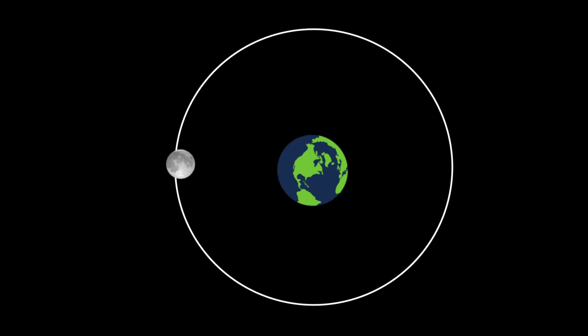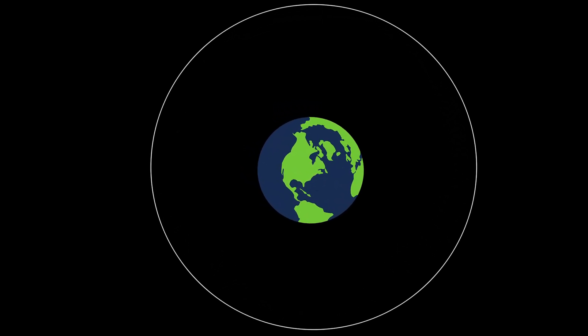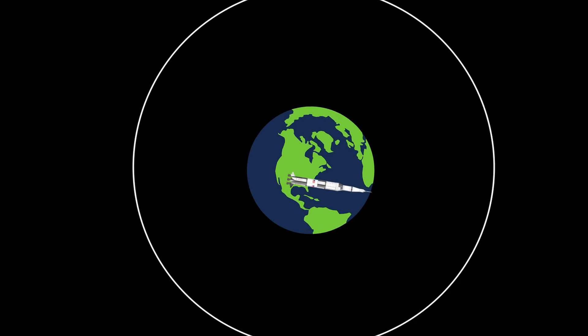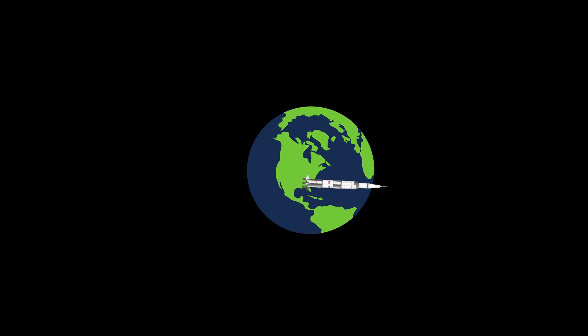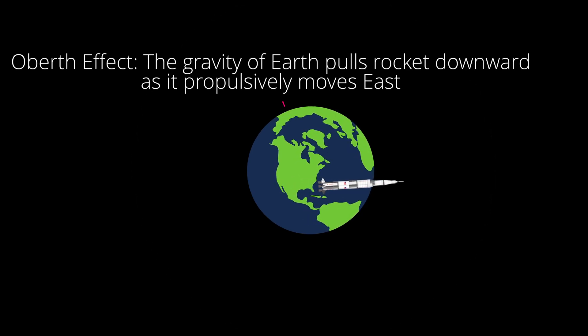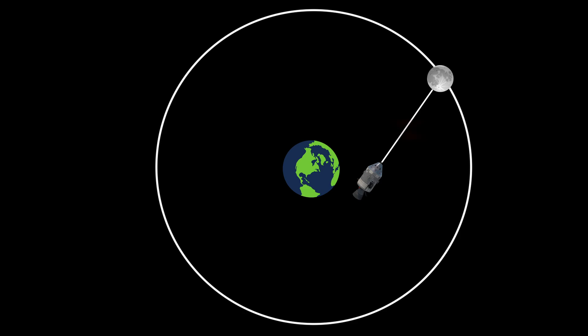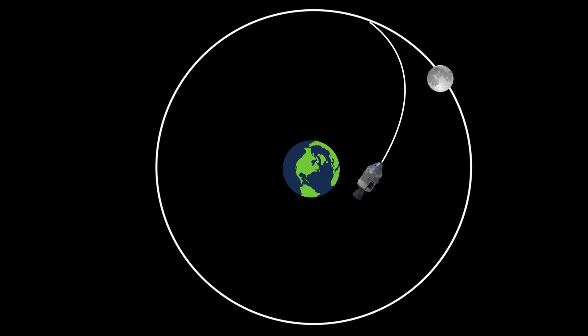The Saturn V rocket launches in the direction of the Earth's rotation to take advantage of its rotational Oberth effect. Now the rocket doesn't simply point and shoot itself to where the moon is visible — it must create a separate translunar injection burn, pointing the ship where the moon should be at a certain point in time.